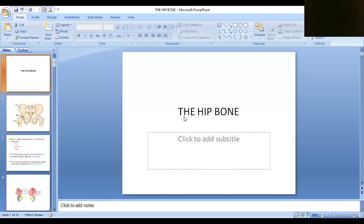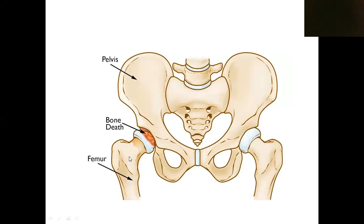Dear students, now we are going to discuss about the hip bone. The hip bone connects the lower limb to the trunk. Your body has a head, neck, trunk, and two limbs. The lower limb involves the thigh, leg, and foot. This lower limb is connected to the trunk by the hip bone, which is an irregular bone not having any particular shape. These bones are also known as pelvic bones.